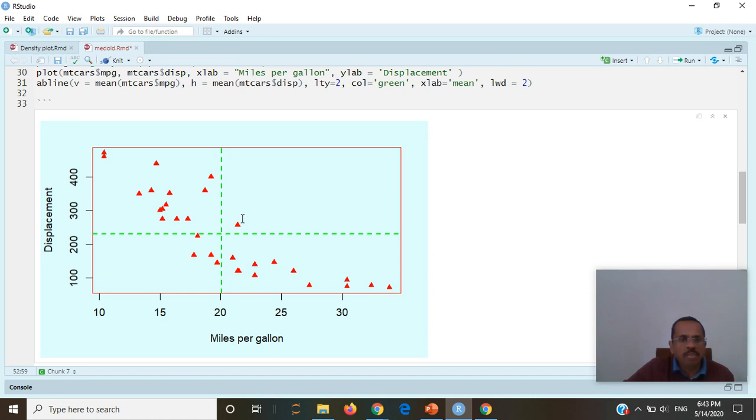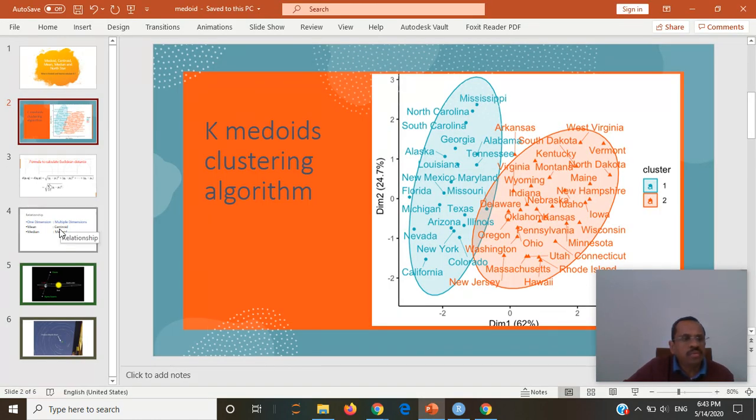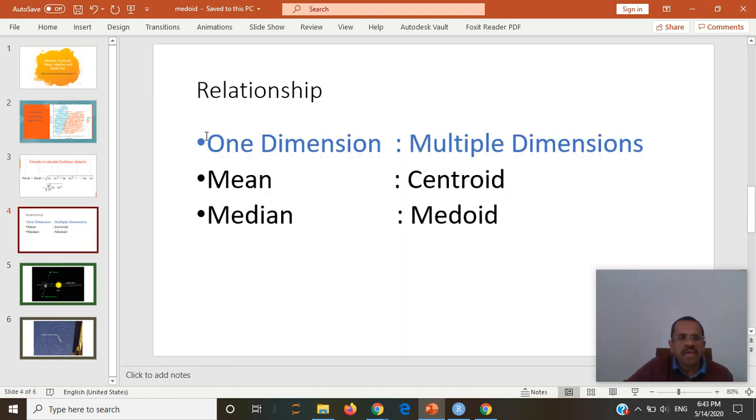I will just go to the concept. If it is one dimension, we call this mean. If it is multiple dimensions, we call it centroid. If we calculate median in one dimension, it is called medoid in multiple dimensions.